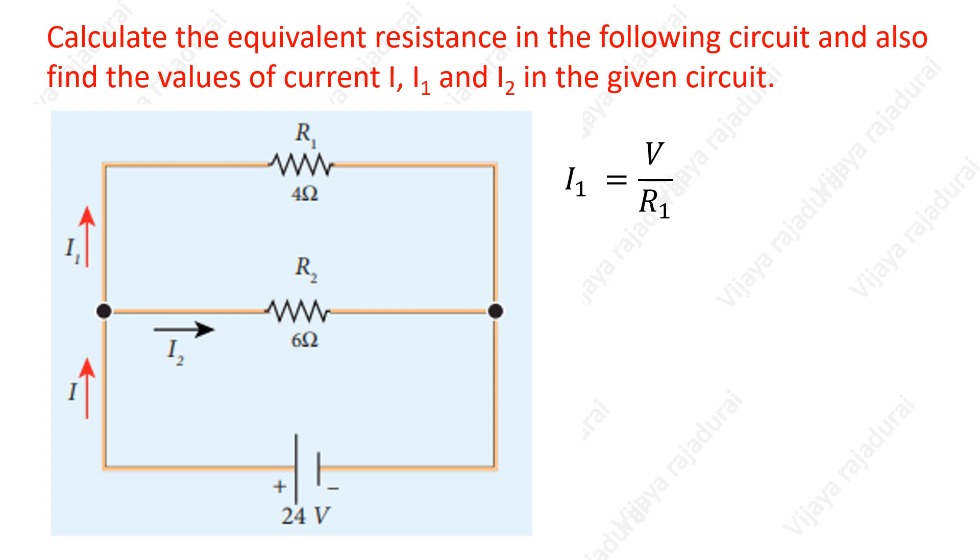For I1 calculation, we take V by R1. Substituting potential difference and resistance values, we get 24 by 4. It is equal to 6 amperes.